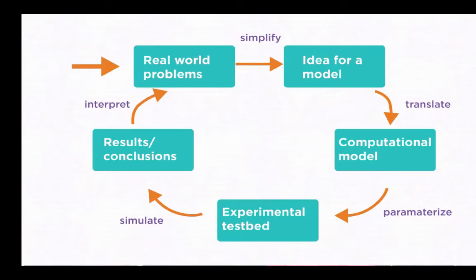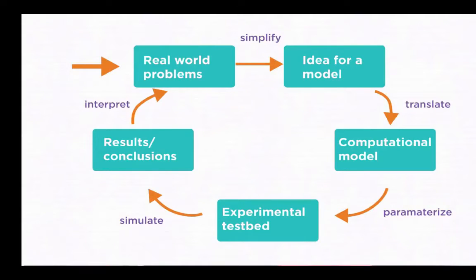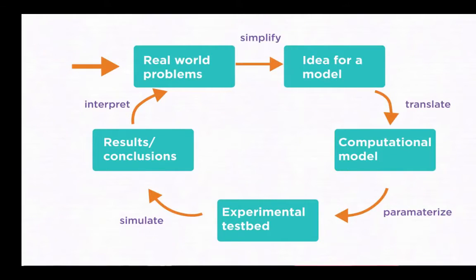Finally, we run simulations using the computer model we created as an experimental test bed. Simulations run time forward as if we could speed up time to see how the future unfolds. During the simulation, we can produce and capture data. From these data, we draw conclusions and interpret if our model has any basis in reality. If the model reproduces some features of reality that we care about as compared to the real-world data, perhaps it can be used to help us understand or make predictions about the real world.